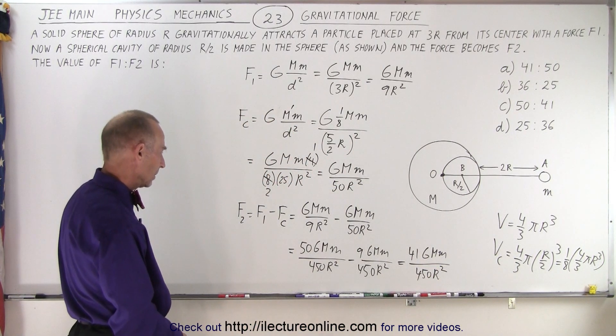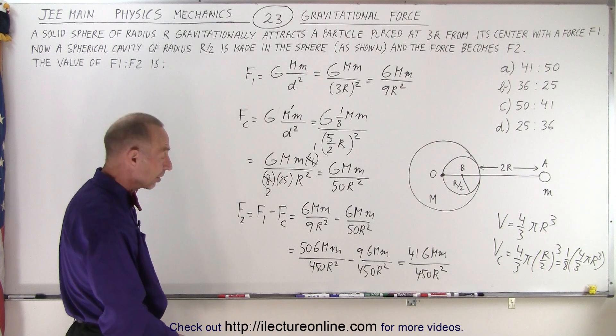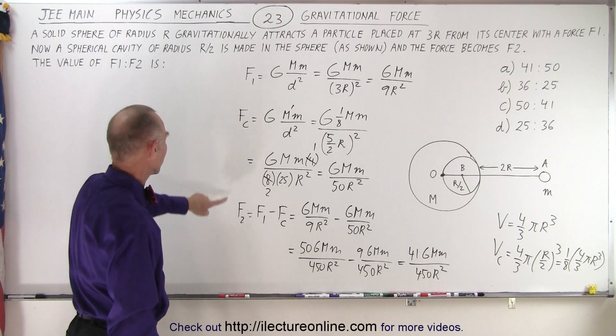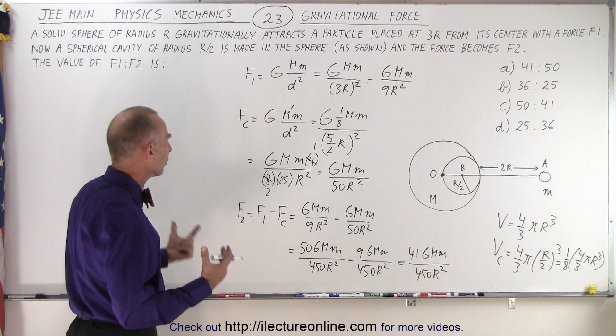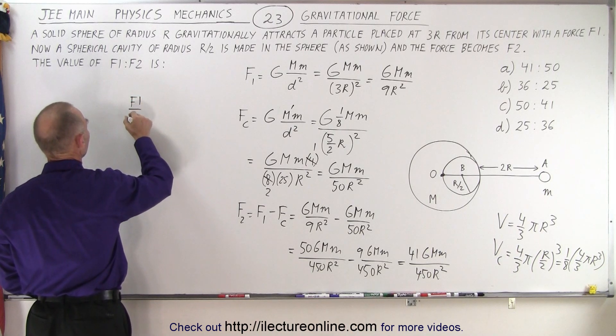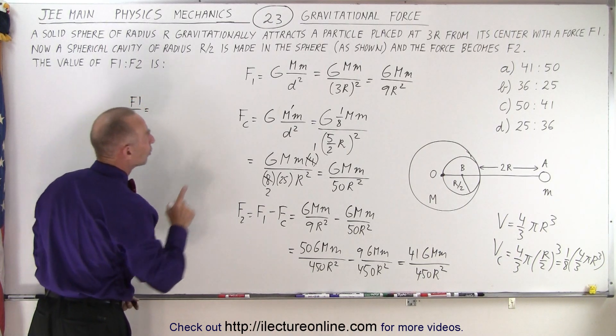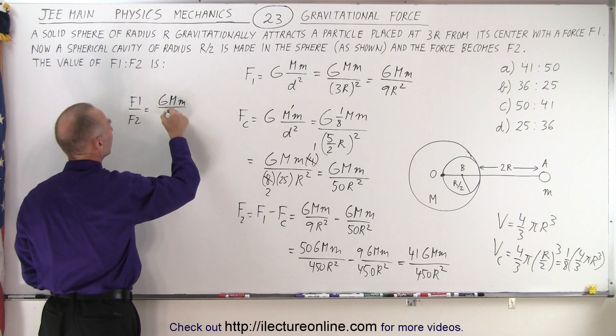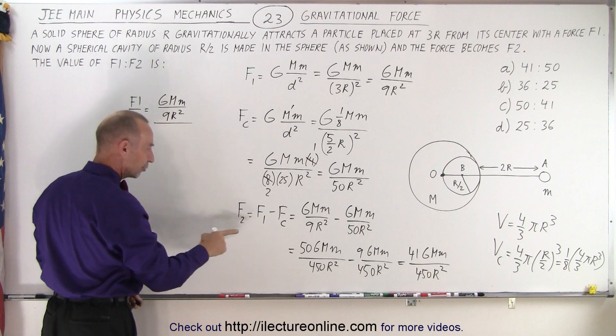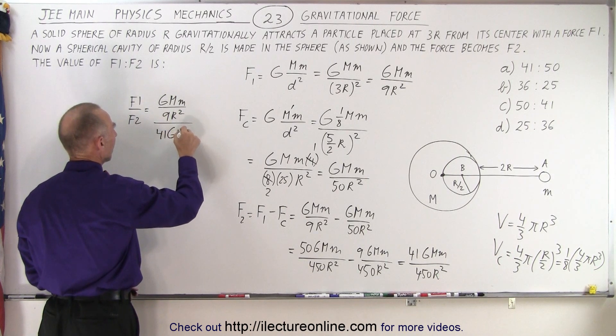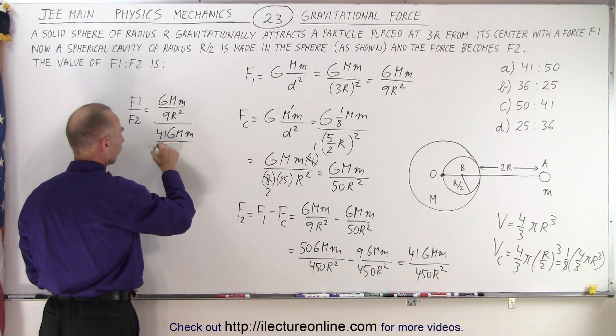Well now we have ourselves an interesting dilemma. So we have F1, we have F2, we want to find the ratio of those two. So now let's go F1 divided by F2 which is equal to GMm over 9r² divided by 41GMm over 450r².